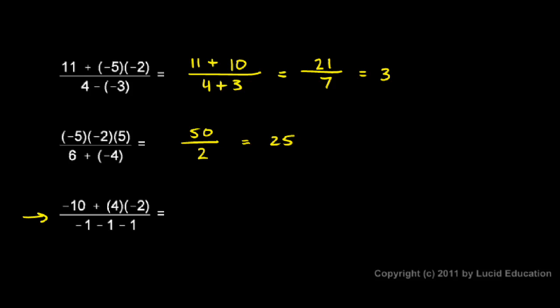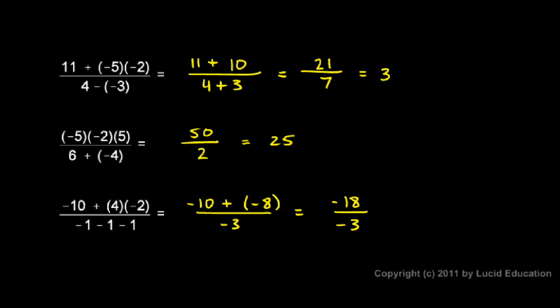In the third example, the numerator is negative 10 plus 4 times negative 2. I need to do the multiplication first: 4 times negative 2 is negative 8, so the numerator becomes negative 10 plus negative 8, which is negative 18. The denominator is negative 1 minus 1 minus 1, which is the same as negative 1 plus negative 1 plus negative 1, equaling negative 3. Negative 18 divided by negative 3 is positive 6.